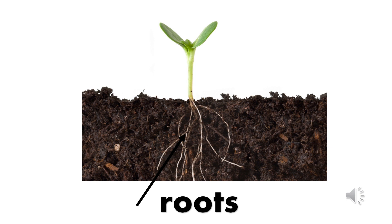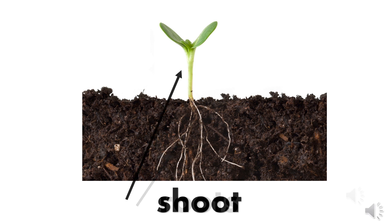Now look very carefully at this picture. What do you see in the soil? Did you say roots? You're right! Roots hold the plant in the ground and keep it upright. The roots take water and food from the soil so the plant can grow. This is a shoot — the part of a plant that comes up from the ground when it is beginning to grow.